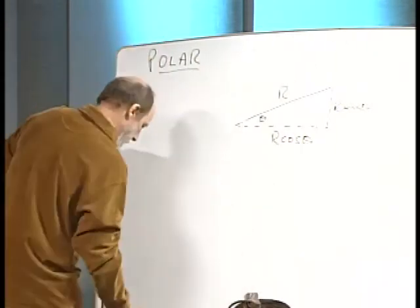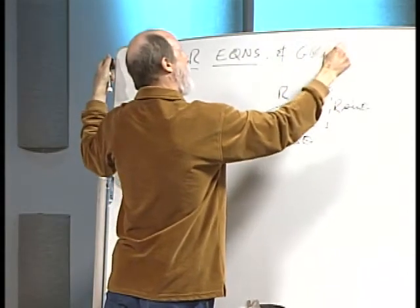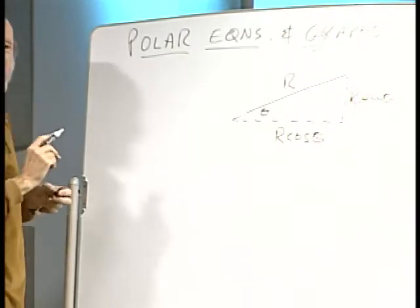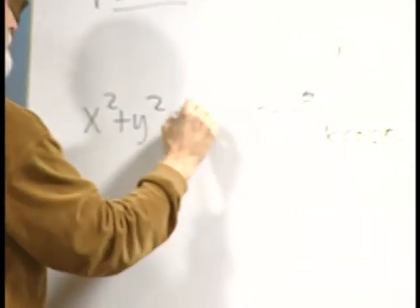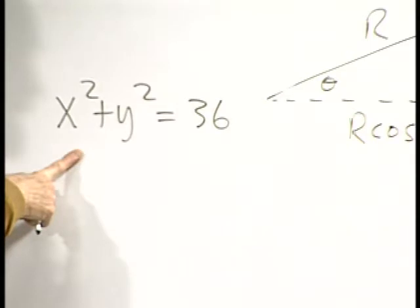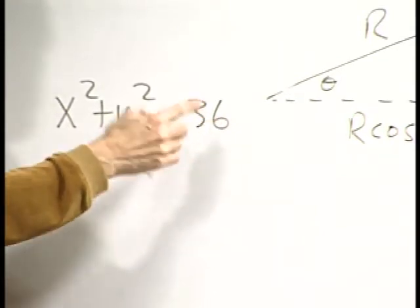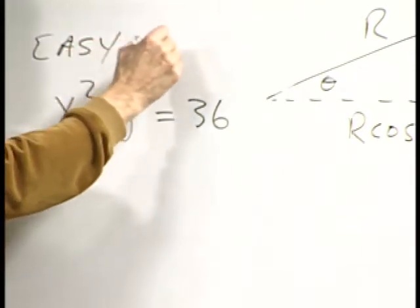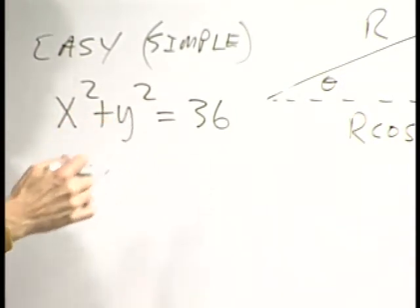Let's talk about polar equations and graphs. If I give you the equation x-squared plus y-squared equals 36, that's a simple equation — it's a circle of radius 6. Similarly, the equation y equals 3 is a simple horizontal line. Both of these simple rectangular equations have interesting polar equivalents.